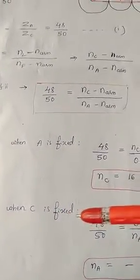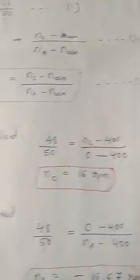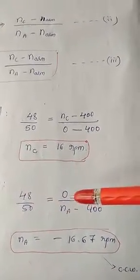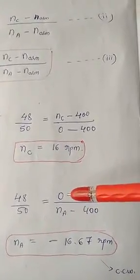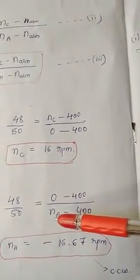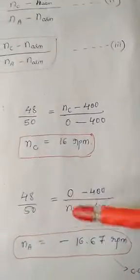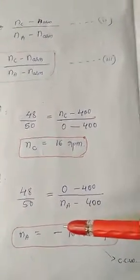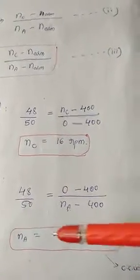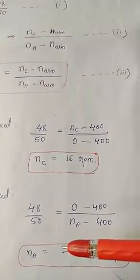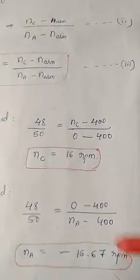Case 2: When C is fixed, find the speed of gear A. Apply the values: 48/50 = (0 − 400) / (NA − 400), since NC = 0 because C is fixed and NR = 400. Solving gives NA = −16.67 rpm. The minus sign indicates the rotation direction of gear A is counterclockwise. So NA = −16.67 rpm, solved by the algebraic method.